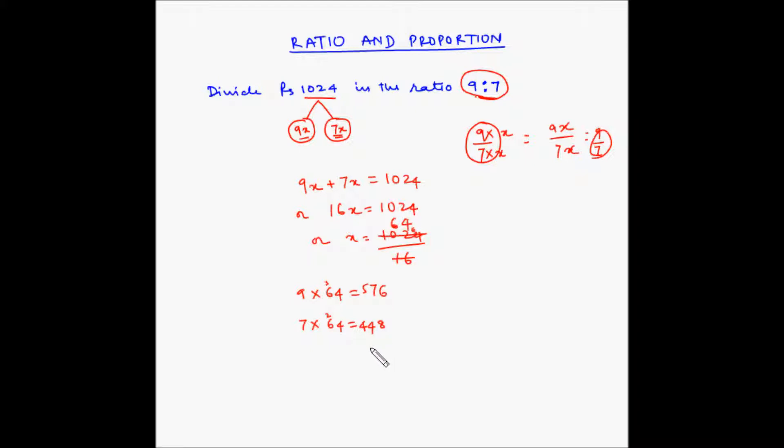Now, if you add these two up, 576 plus 448, 6 plus 8 is 14, 7 plus 1 is 8 plus 4 is 12, and 5 plus 5 is 10. The total comes out to 1024.